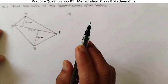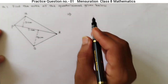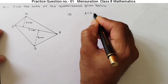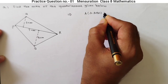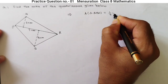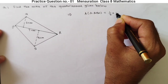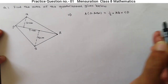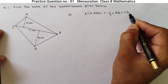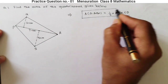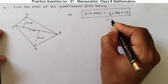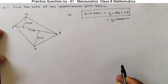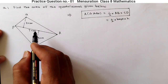We know the formula for area of the triangle. For area of triangle ABC, it is equal to 1/2 into base into height. If base is AB and height is CD, that is base into height. This simple formula we will use to solve our problem.